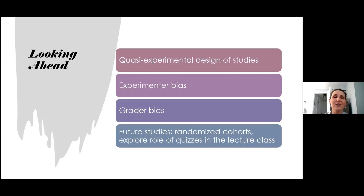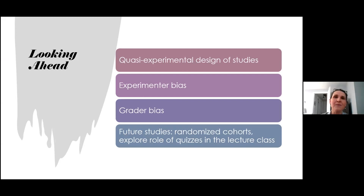Looking ahead, lots can be done to build on the results of this meta-analysis and improve the quality of studies comparing flipped and lecture classes in intro stats. With the quasi-experimental design, students select their preferred course section, so it's possible that students were stronger on average in the flipped sections. Most studies did not look at GPA, so it is recommended to measure GPA and other confounders in future research. Ideally there should be random assignment to class sections, though this is next to impossible to accomplish in educational research.